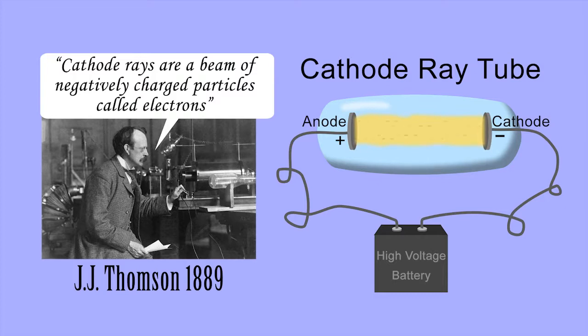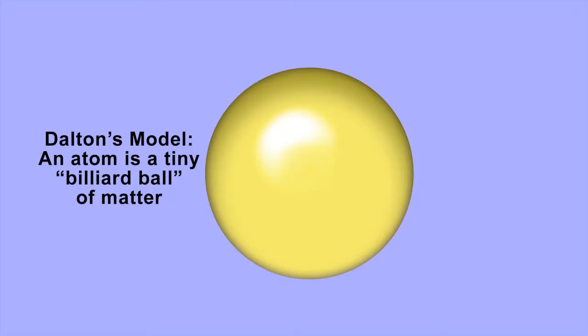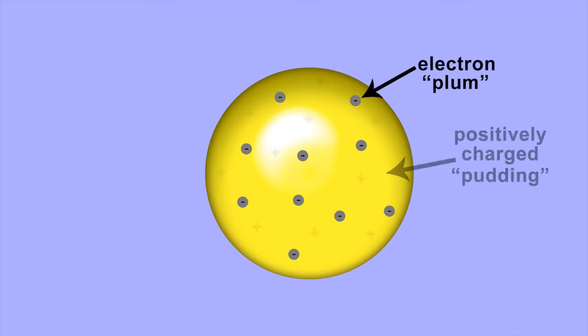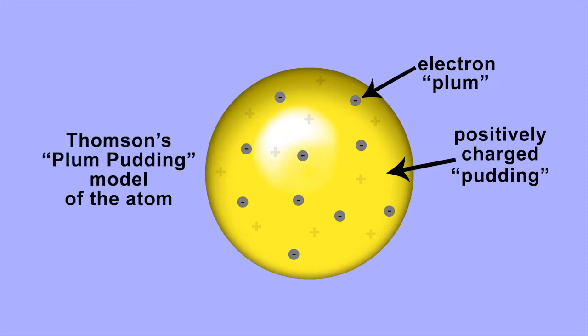He stripped electrons off atoms by applying a high voltage across electrodes. He modified Dalton's model of the atom, postulating that electrons are embedded in the atom, like bits of plum in a pudding. The pudding-like material that makes up the bulk of the atom is positively charged, balancing the negatively charged electrons to create an electrically neutral atom.